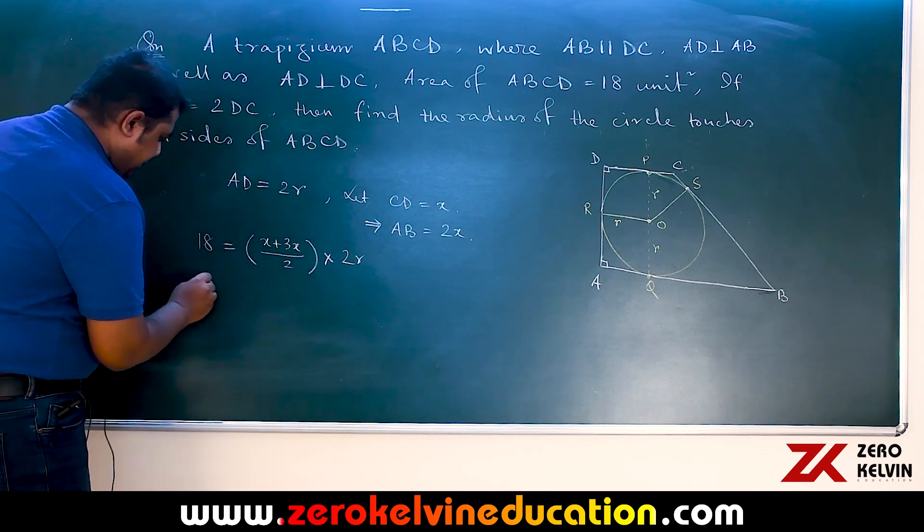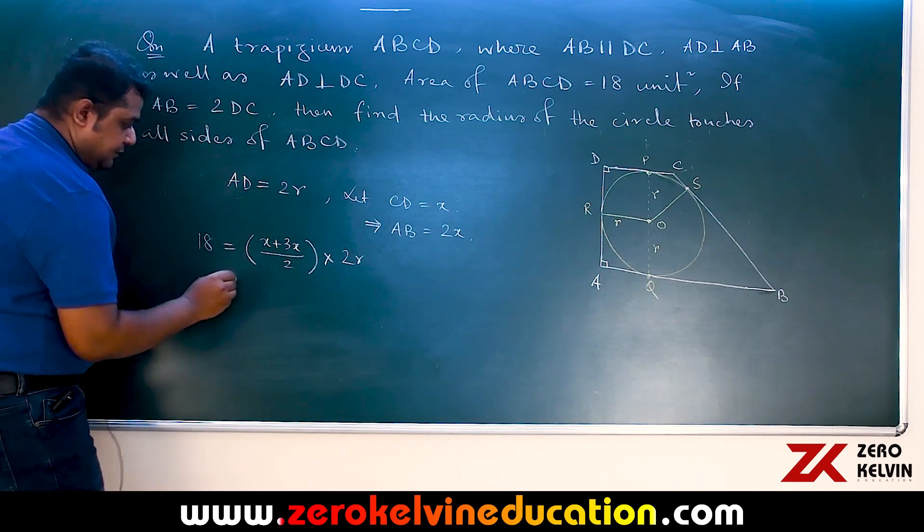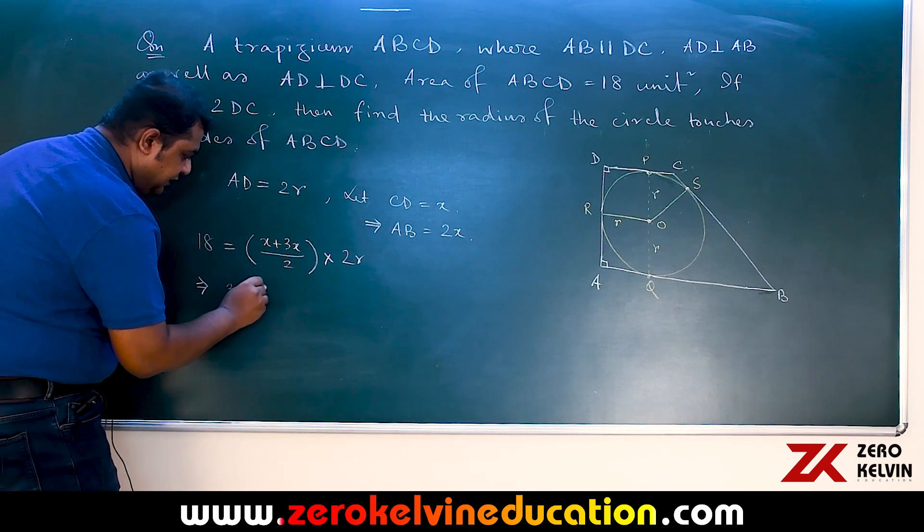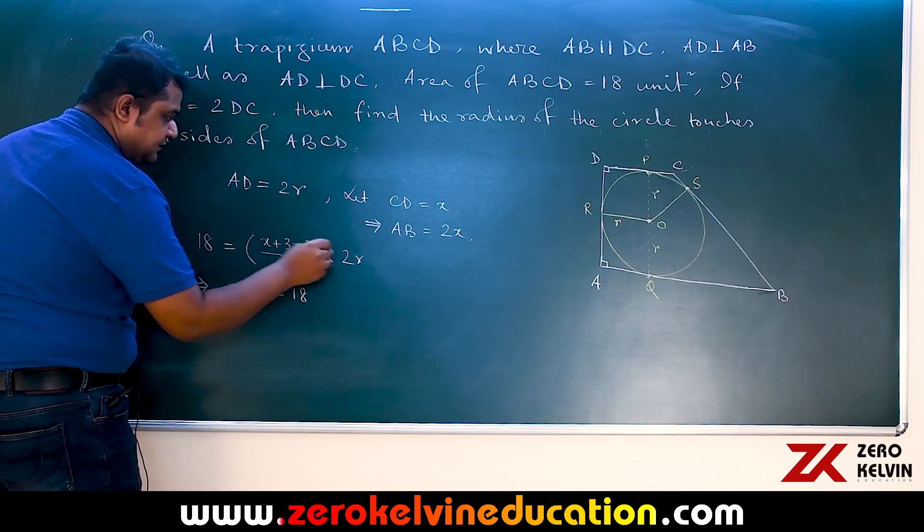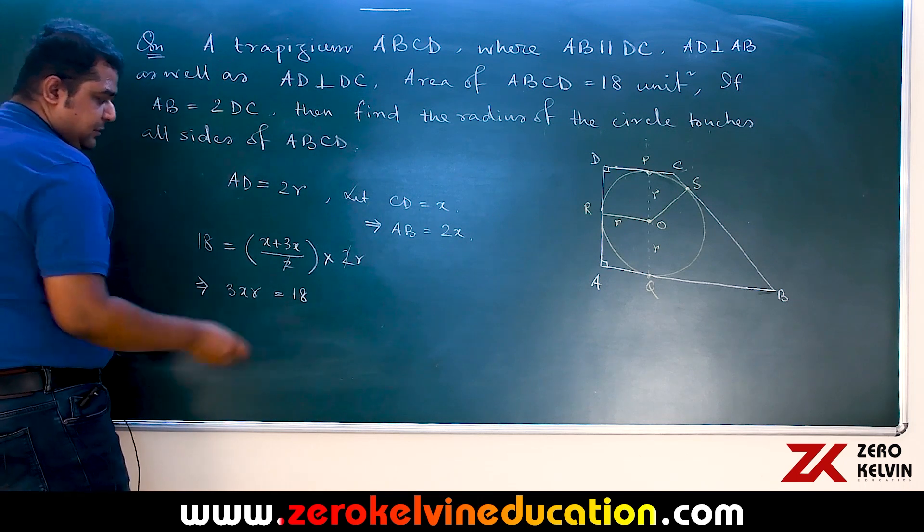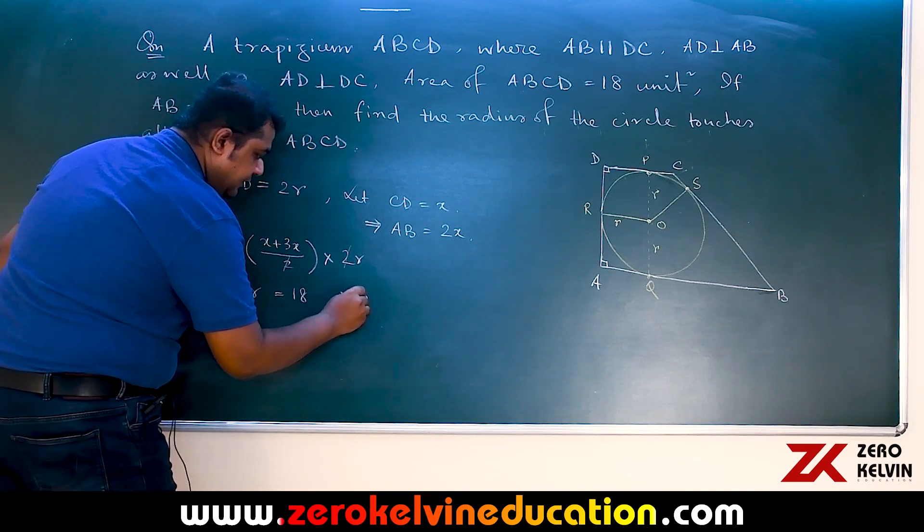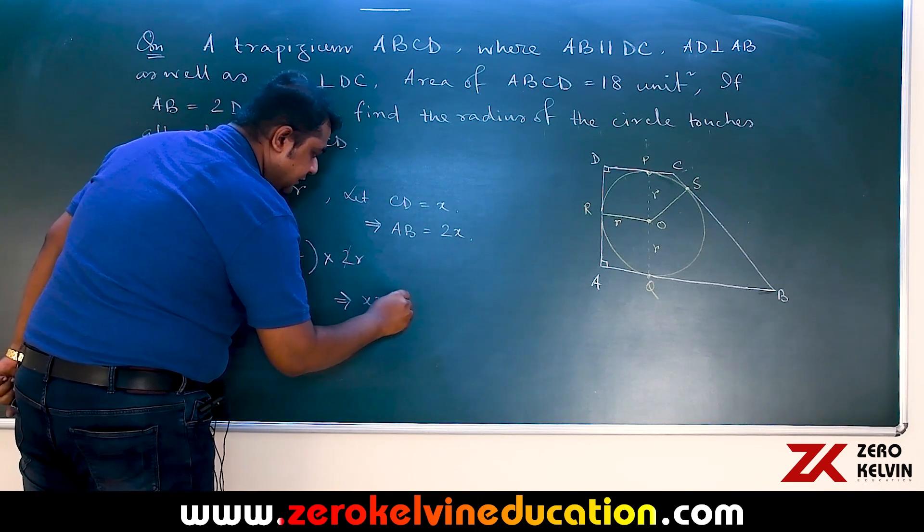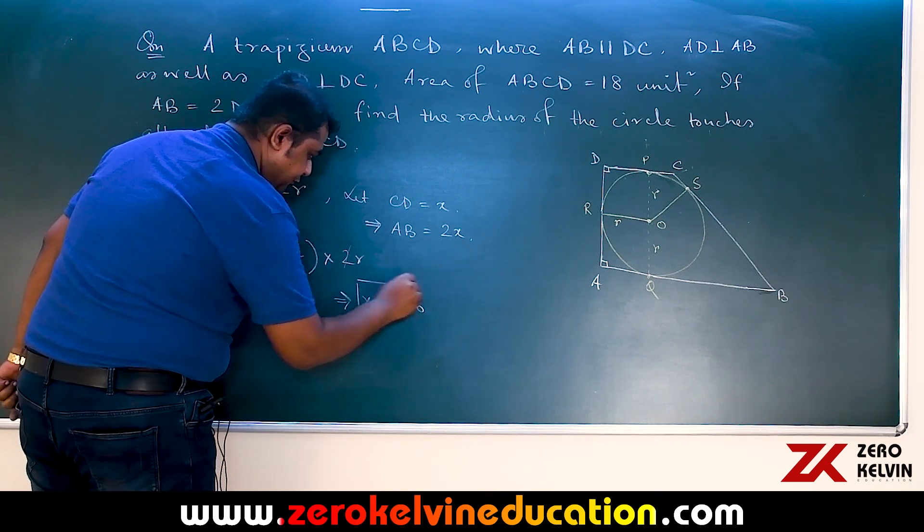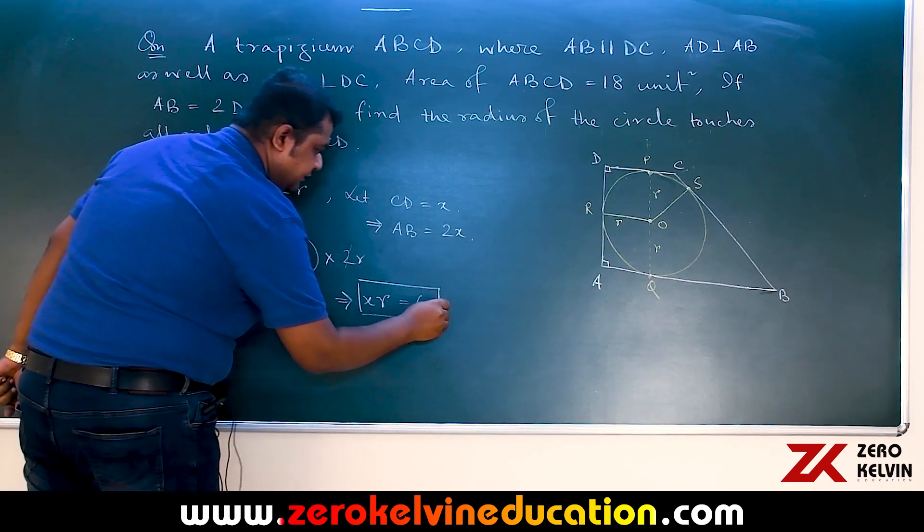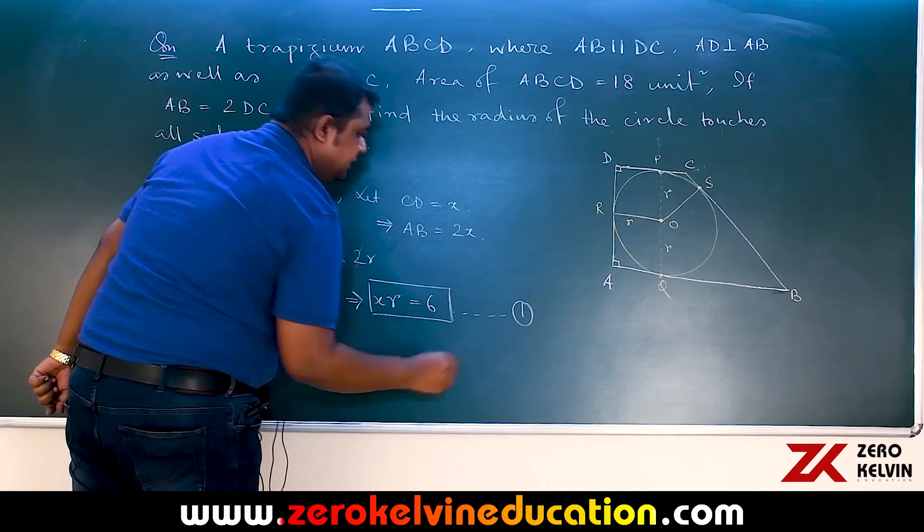That gives us 3x times R equals 18 with cancellation of these two, or x into R is 6. So we are keeping this as a result. Let us mark this as equation 1.